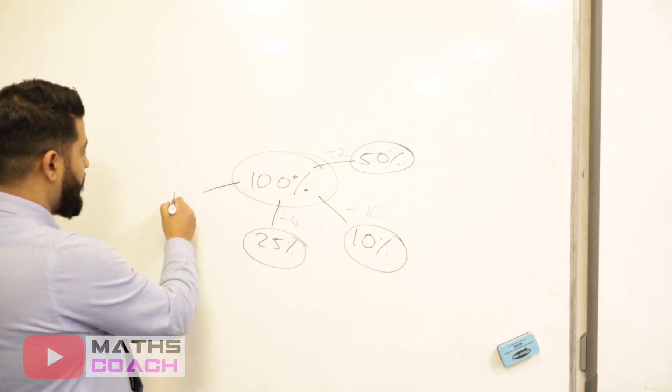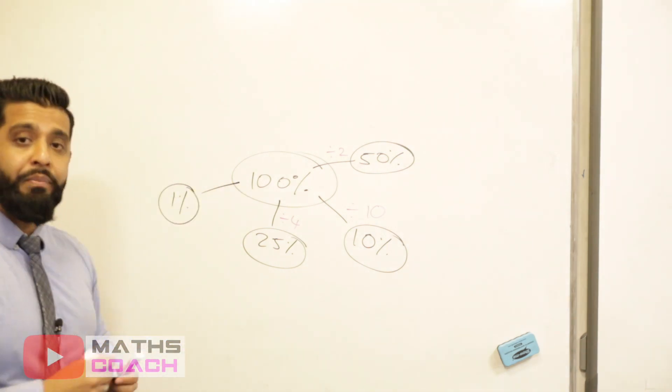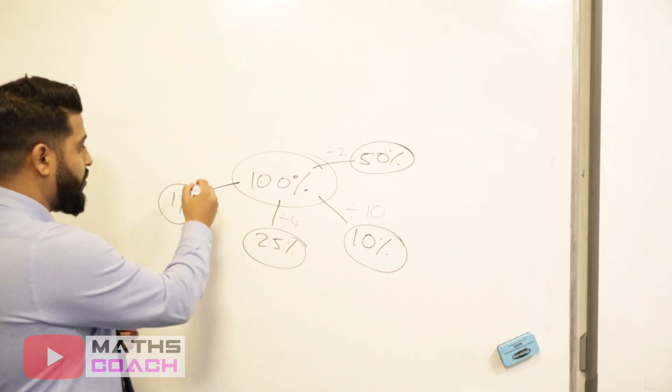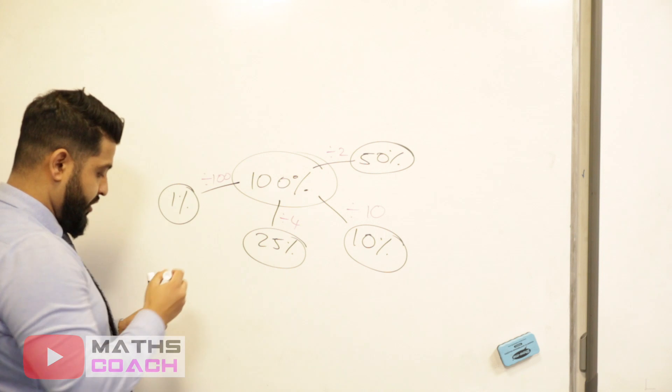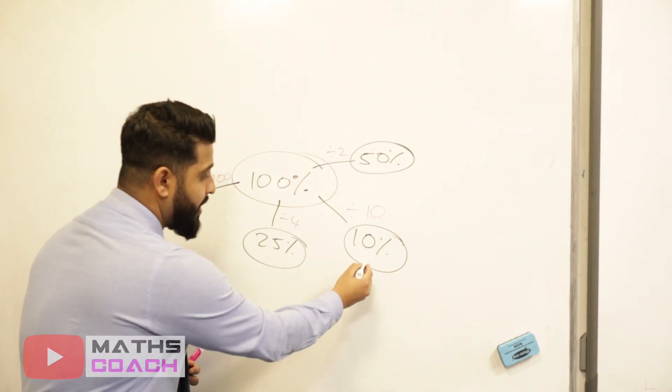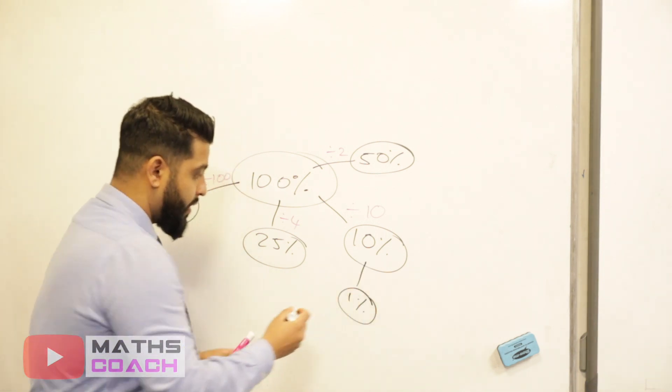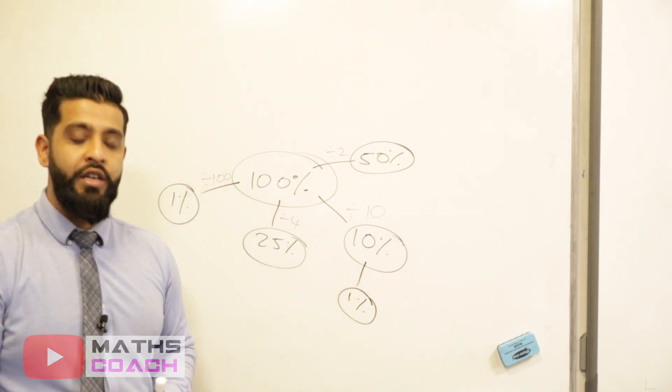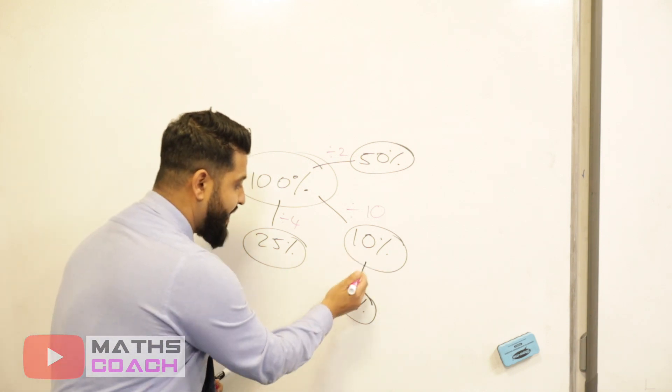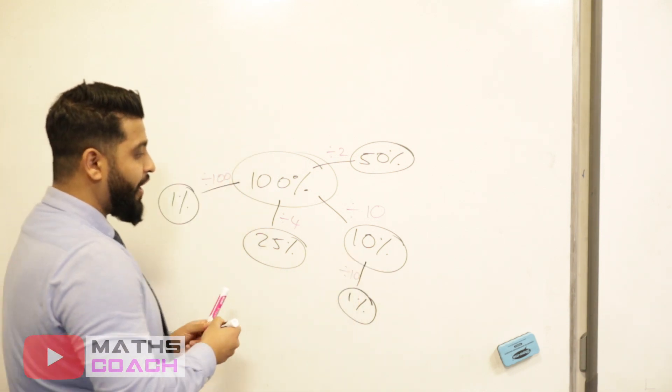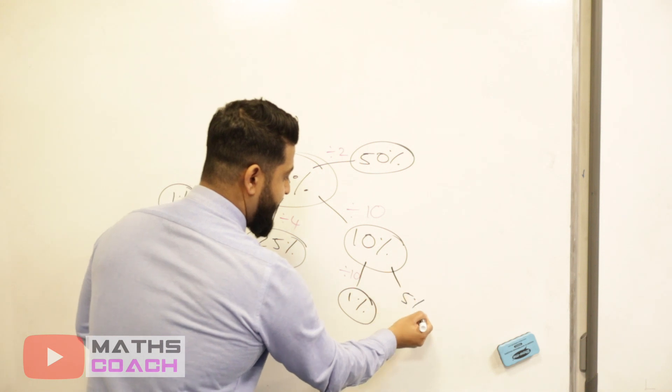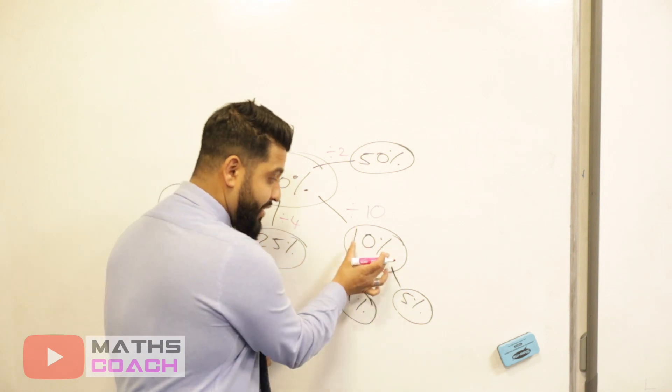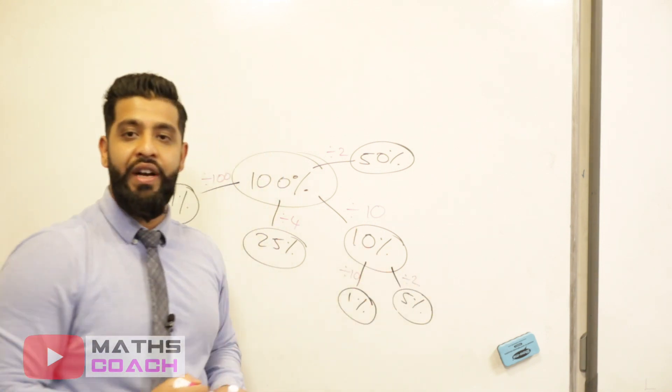And you can use this to find other percentages too. For example, if you want to find what 1% is, how many 1% are in 100%? We know that there are 100, so we will divide by 100. We can also find 1% using 10%, because we know that there are 10 one percents in 10%. So we can get 10% and divide it by 10.